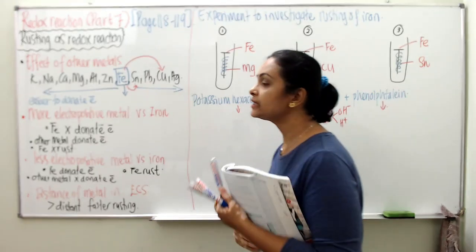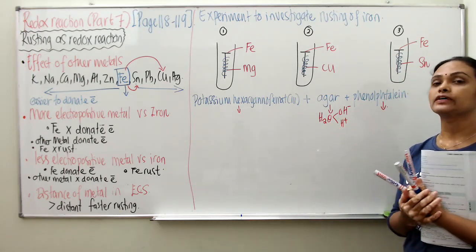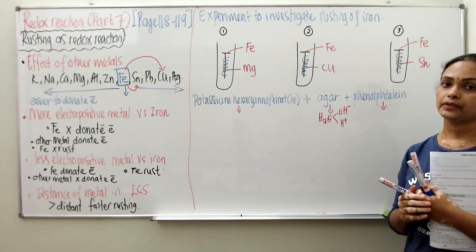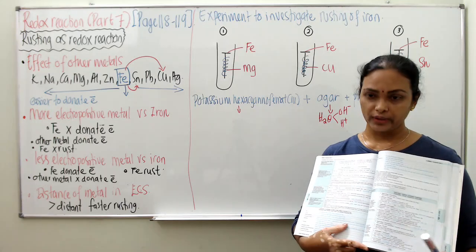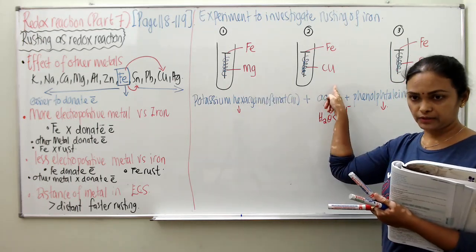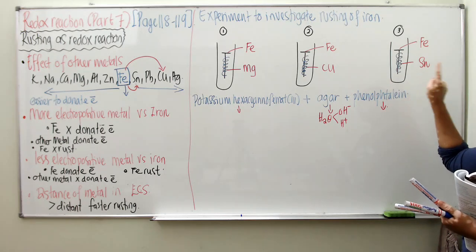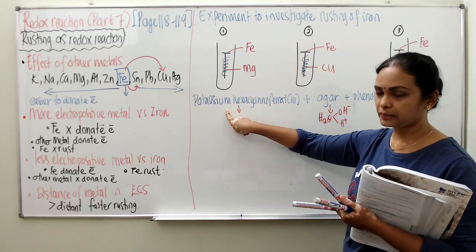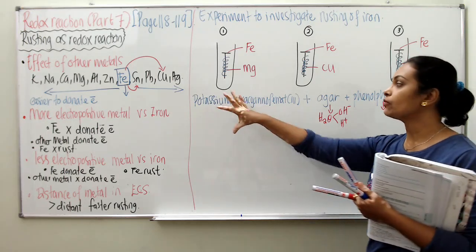Before we go to this experiment, please refer to pages 118 and 119. This is actually one of the toughest experiments because a lot of concepts are involved, and it is also a popular Paper 3 question. Now, if you look at your diagram, all the test tubes contain a substance called potassium hexacyanoferrate(III), and also agar and phenolphthalein. Teacher will explain the function of all three of these.